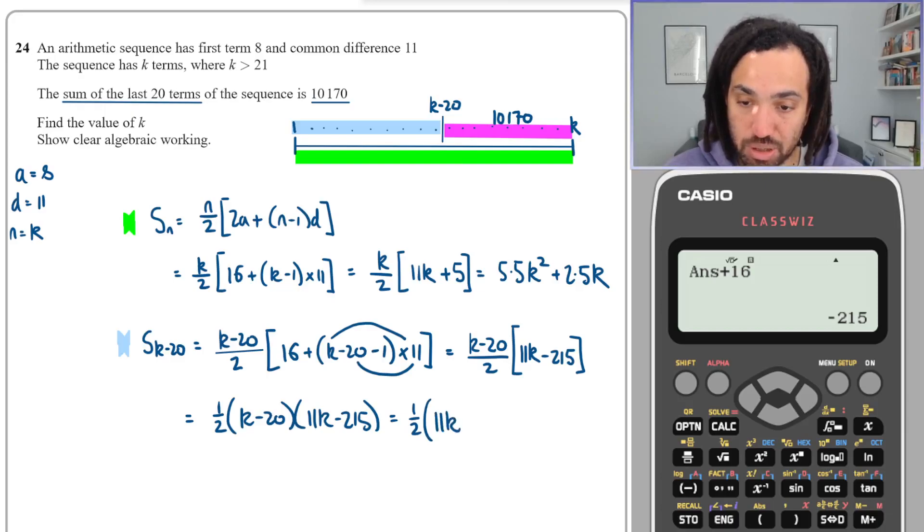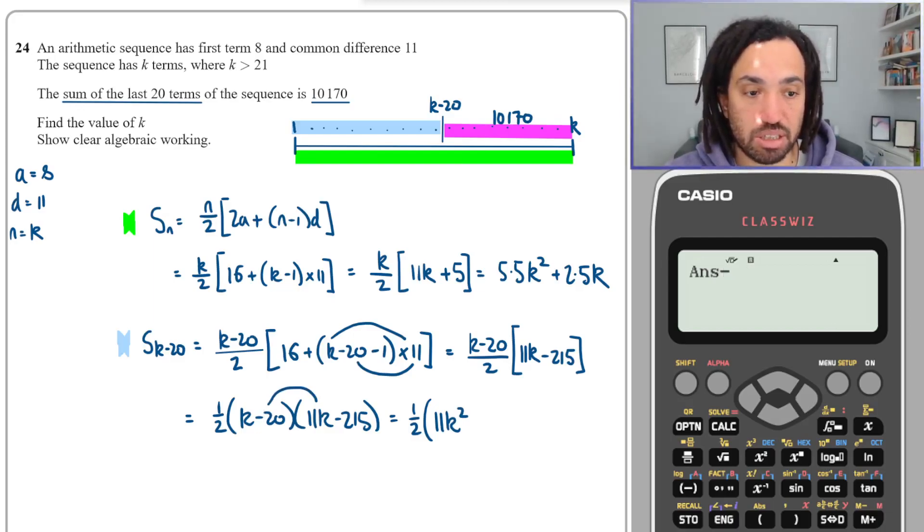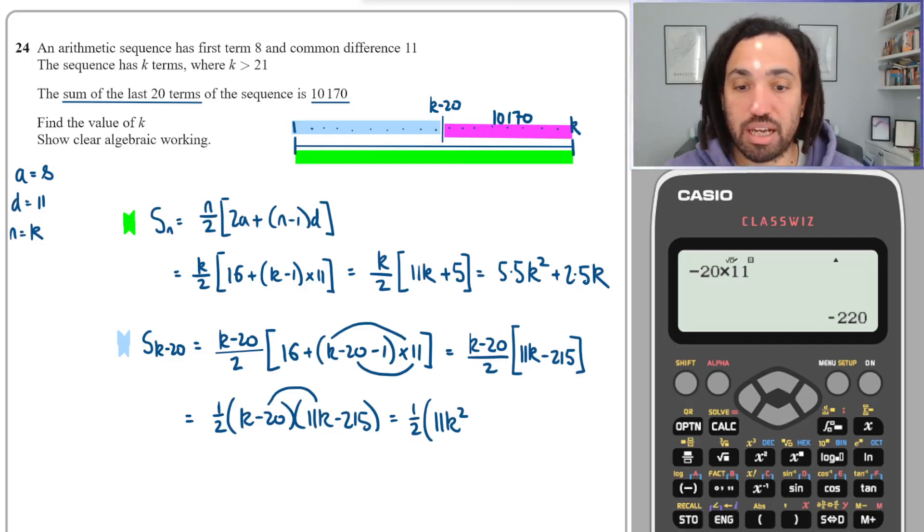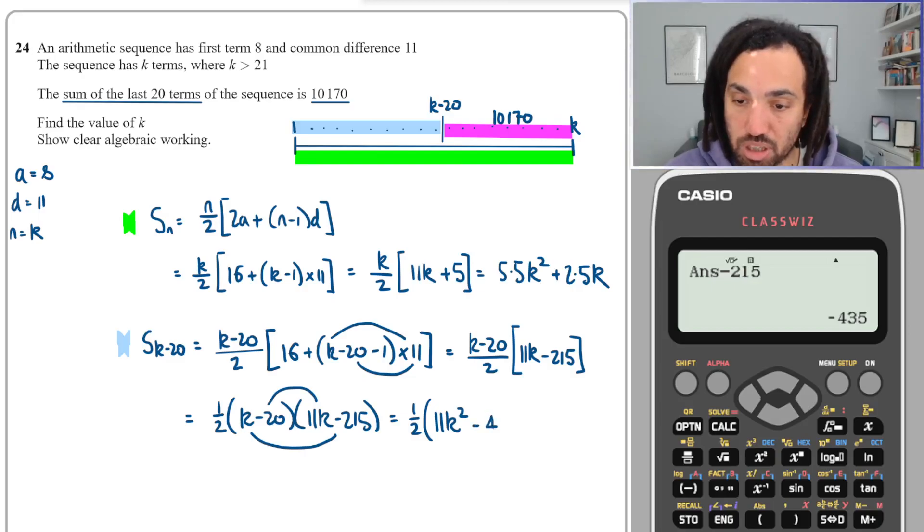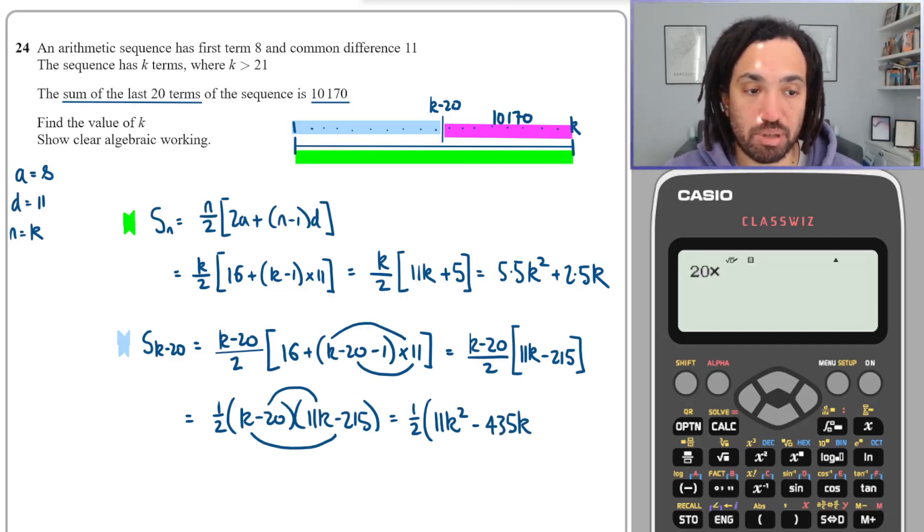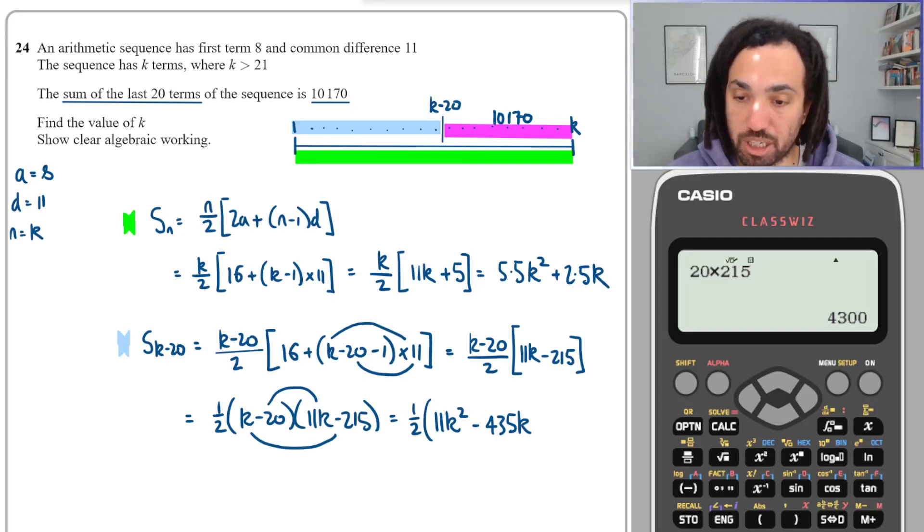Okay, so that's a half times by this double bracket multiplied. So we're going to get 11k squared. I'm going to get minus 20 times by 11k, which is minus 220. And then I'm also going to get minus 215k, so a total of minus 435k. And then I'm also going to get just 20 multiplied by 215—both negative, but when we times them they'll become positive.